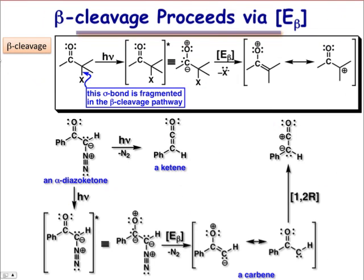Photo-induced β cleavage is possible if there's an acceptable leaving group attached to the α carbon. In general, these processes can be viewed as a type of β elimination.